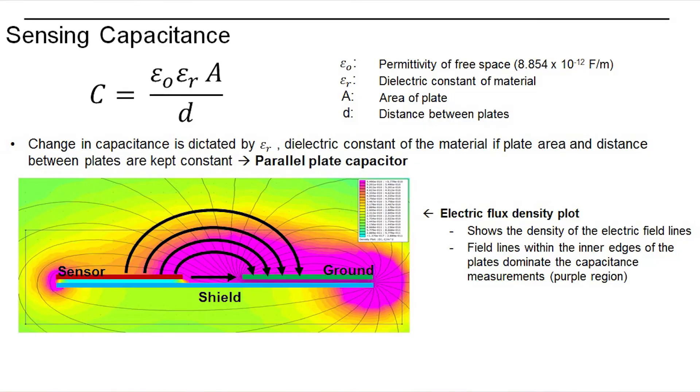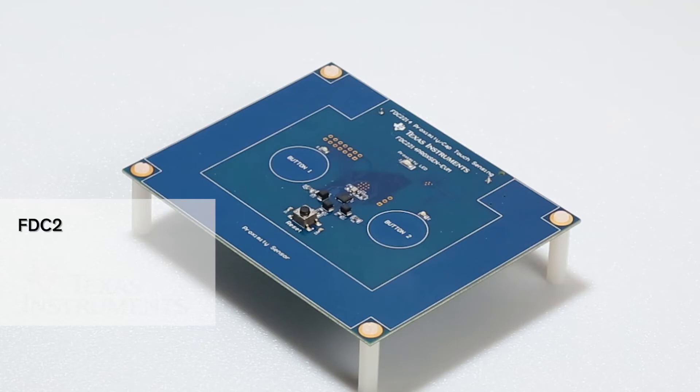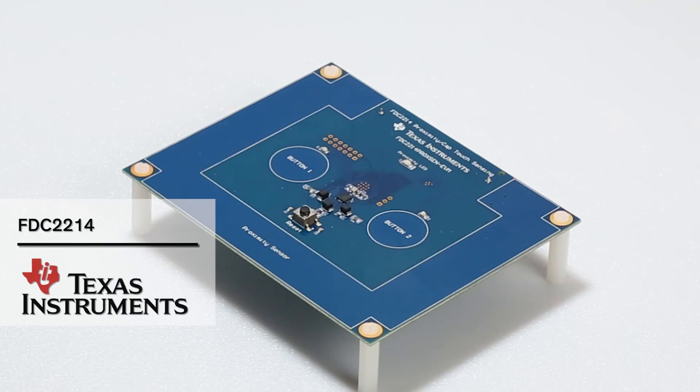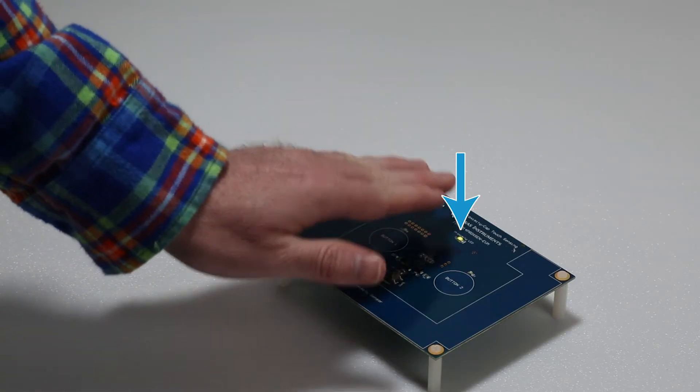For detection of humans or other materials, capacitive detection must be used. A capacitance value depends on the permittivity of the dielectric, the area of the plates, and the distance between the plates. For proximity capacitive sensors, the distance and the area of the plates are fixed. However, inserting an object close to the capacitor changes the dielectric value. For instance, with the FDC2214 from TI, approaching my hand causes the LED to turn on.